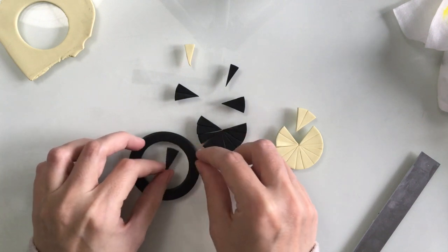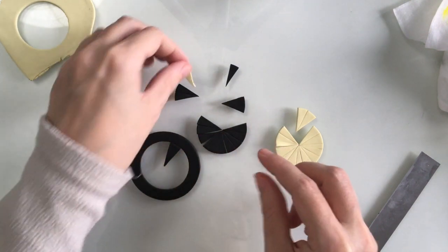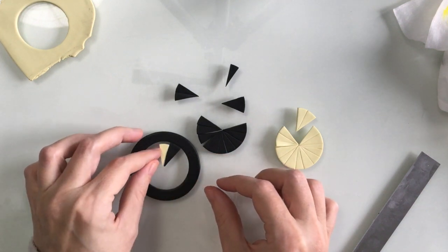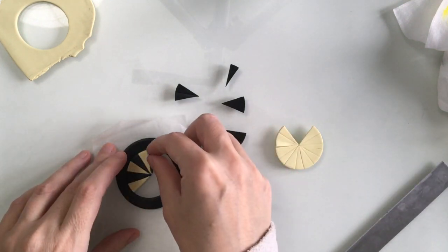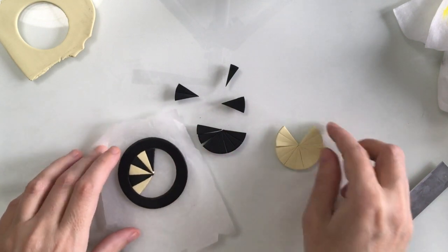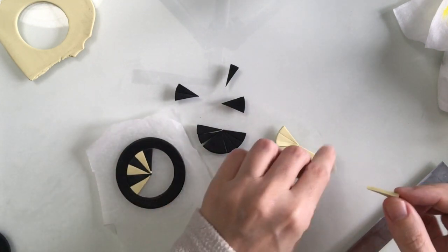I'm just going to start adding the little pies or cheeses. Do you call them pies or cheeses on Trivial Pursuit? I don't know which I am actually, maybe cheeses. I'm going to alternate between the colors, I'm sure you get the idea.